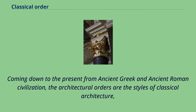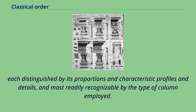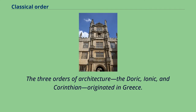Coming down to the present from ancient Greek and ancient Roman civilization, the architectural orders are the styles of classical architecture, each distinguished by its proportions and characteristic profiles and details, and most readily recognizable by the type of column employed. The three orders of architecture — the Doric, Ionic, and Corinthian — originated in Greece.